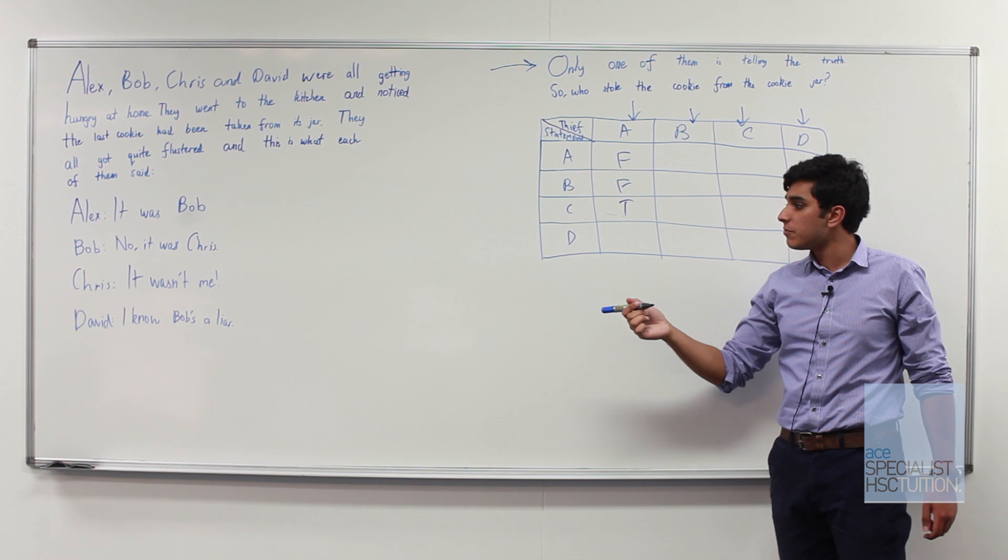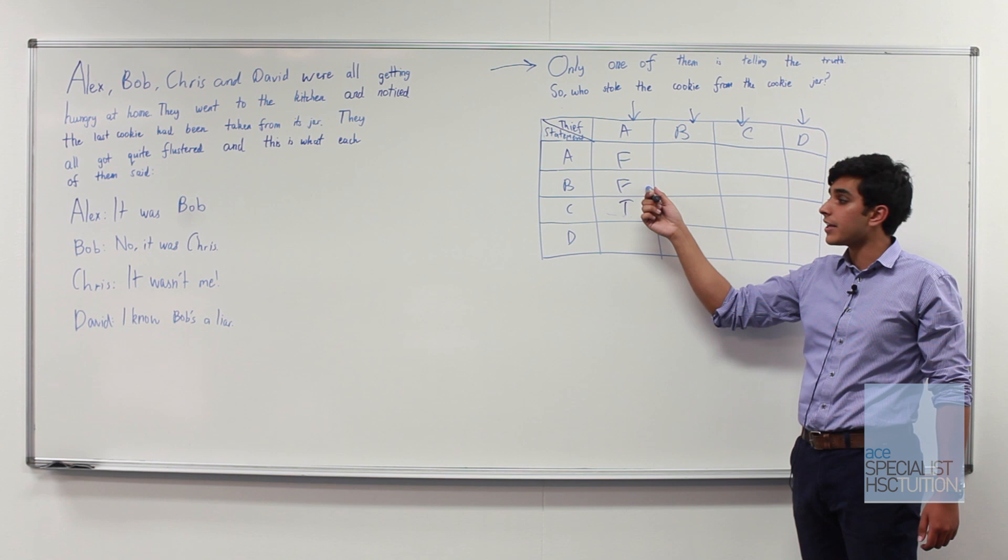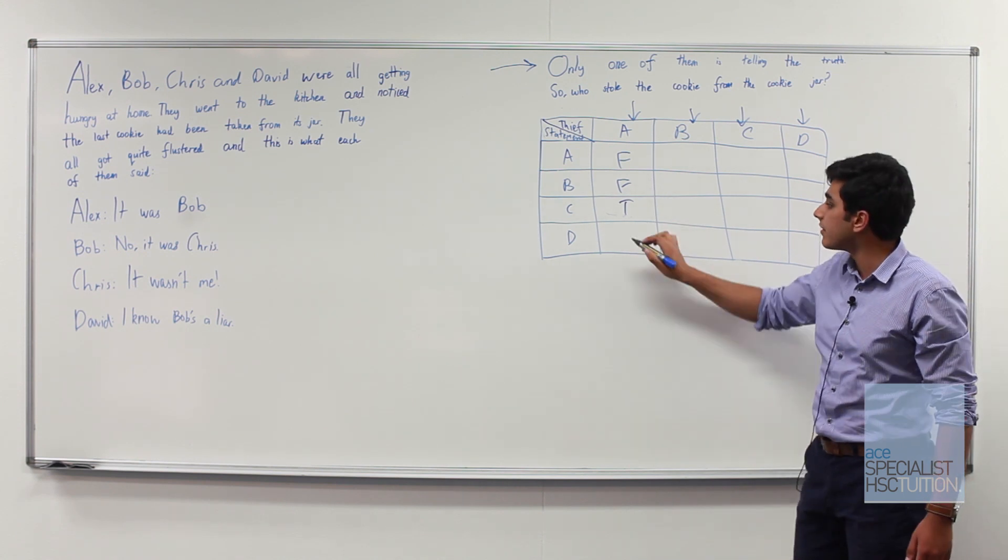And then we look at David's statement which is I know Bob's a liar. Clearly Bob here is telling a lie which would mean David's statement is in fact true.